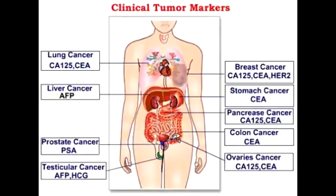What does CEA stand for? CEA stands for carcinoembryonic antigen. Carcinoembryonic antigen is a very useful tumor marker because it is produced by many cancers. It's very nonspecific, but is produced in 70% of colorectal and pancreatic cancers. It is also produced in gastric carcinomas, breast carcinomas, and medullary thyroid carcinomas.